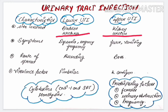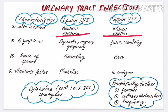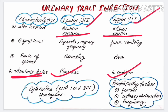In upper UTI, symptoms include fever and vomiting. E. coli spreads through the ascending route in lower UTI, while in upper UTI it can spread through both ascending and descending routes. Virulence factors responsible for lower UTI are fimbriae, and for upper UTI are K-antigen. Other virulence factors involved in UTI include cytotoxins and hemolysins.